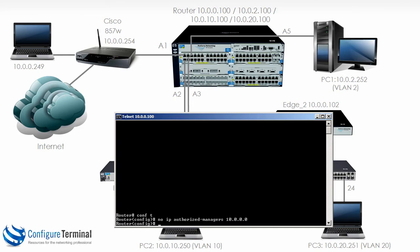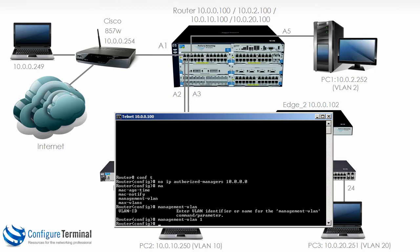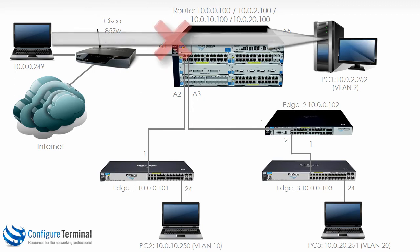However, we can now type the command 'management VLAN' and just specify VLAN 1 as the management VLAN. Now as soon as I've done that, I cannot connect from our management machine to machines in other VLANs — the other VLANs are essentially isolated from the management VLAN.